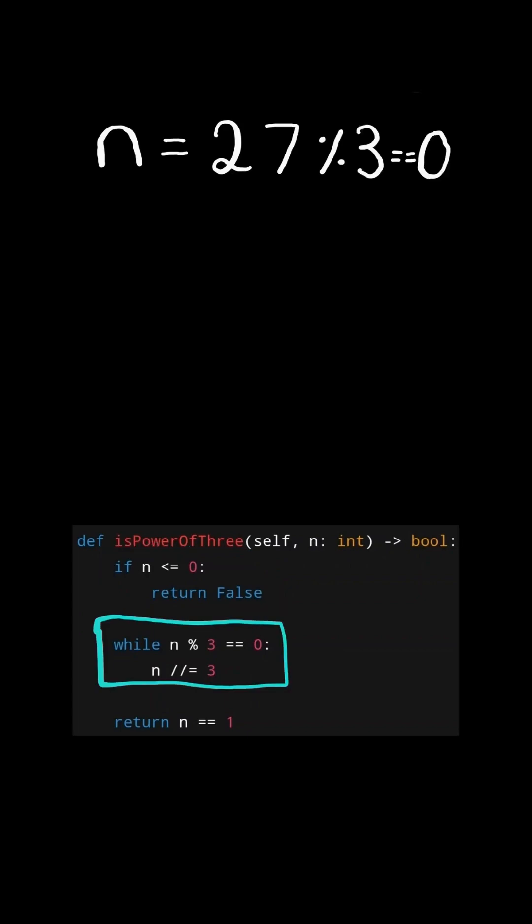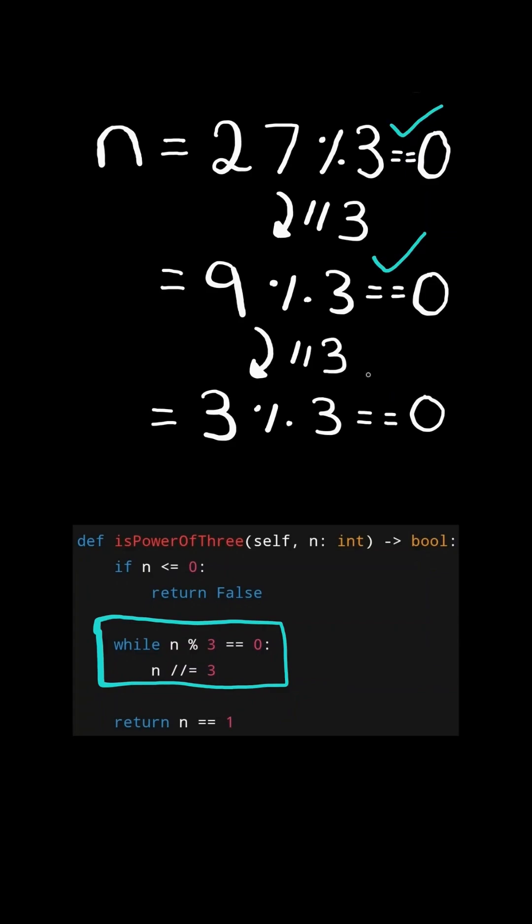Now if n is greater than 0, we continuously check, is n divisible by 3? In this case, 27 is divisible by 3, so we then divide n by 3. And we continue the process. Is n divisible by 3? In this case, 9 is divisible by 3, so we continue the process and divide n by 3. And we check again, is n divisible by 3? In this case, 3 is divisible by 3. And again, we divide n by 3.